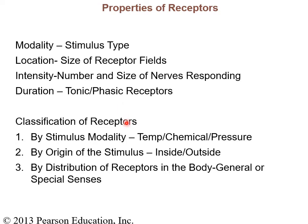You can classify receptors by stimulus modality — whether they respond to changes in temperature, chemical differences, or pressure — and by stimulus origin: whether the stimulus is coming from outside the body via special senses like sight, hearing, taste, and smell, or from touch and pressure receptors in the skin, visceral organs, muscle proprioceptors, and Golgi tendon organs inside the body. Receptors can be very simple, like a nerve ending pain receptor, or very complex, as found in the special senses.